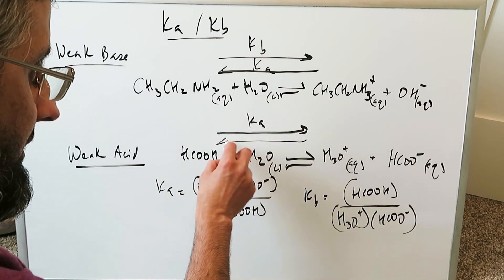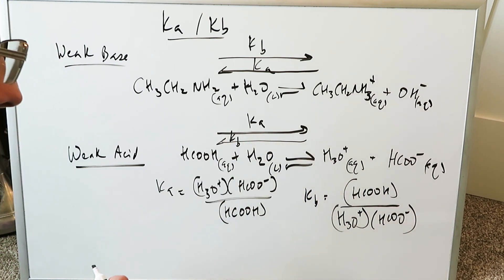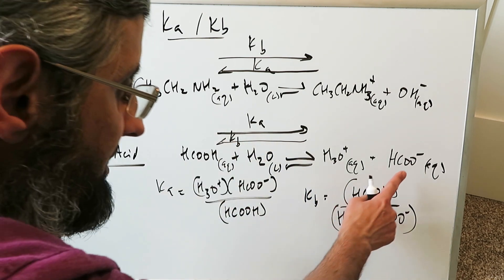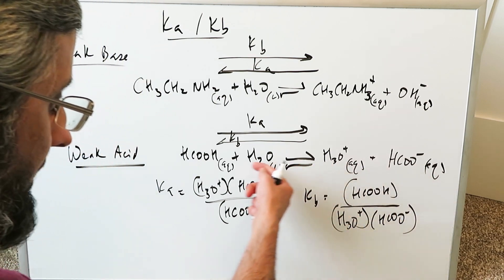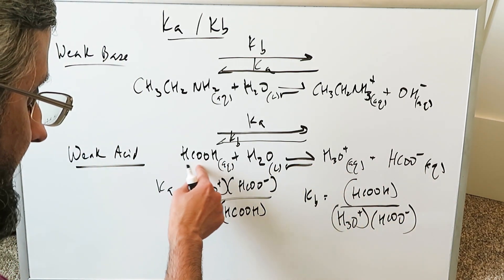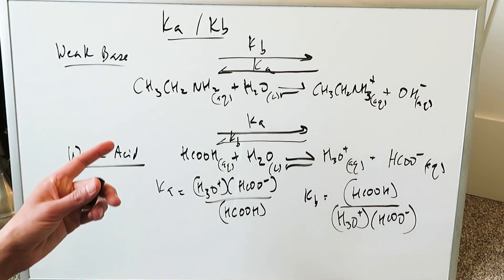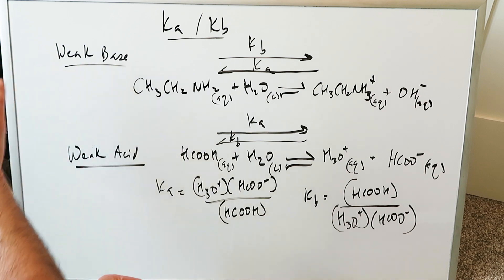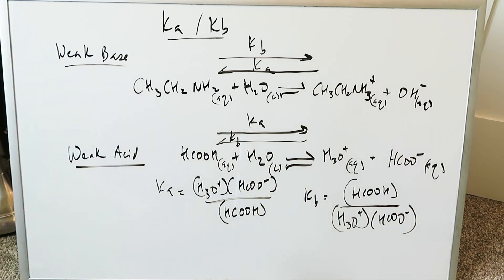When you're looking at this in the reverse direction, you're looking at a base dissociation, because now the conjugate base is giving rise to an acid. Ka and KB are related to the exact same item, but it depends on the direction of the reaction that is at play — then either one or the other comes into play.